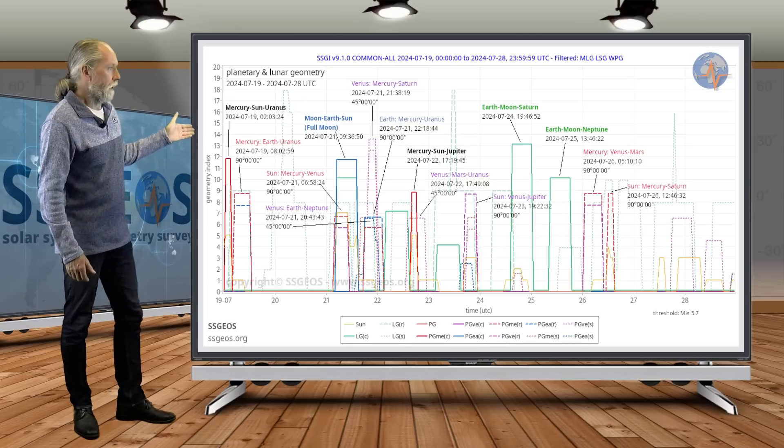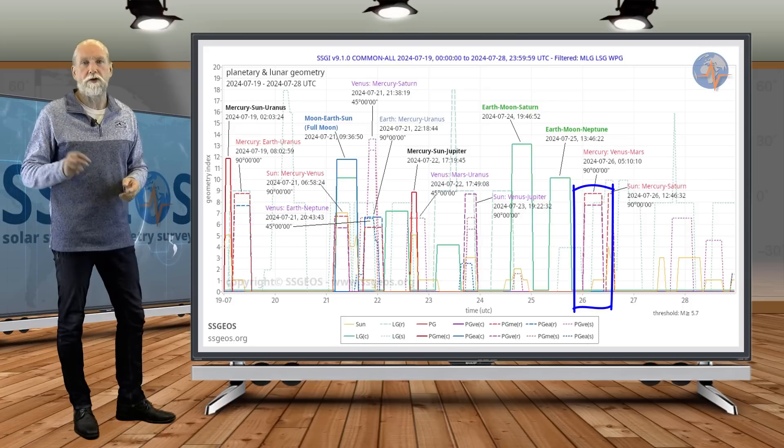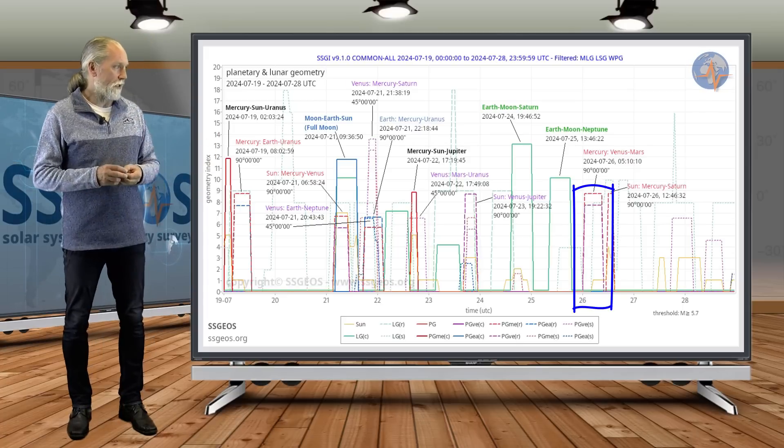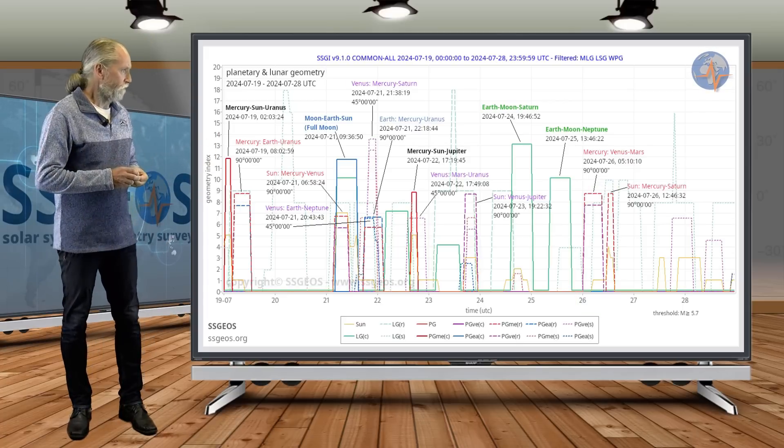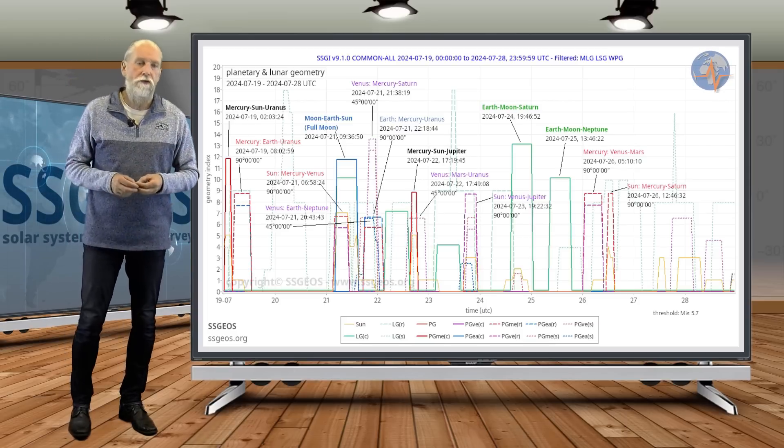And if we look at that time there, we see Mercury, Venus and Mars at the right angle. That's also critical. There's probably going to be seismic response following that right angle with Mercury, Venus and Mars. That's the geometry that we're going to have in the coming timeframe up until the 28th of July.